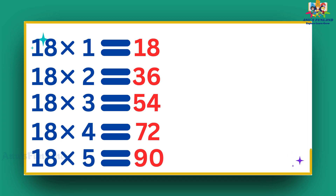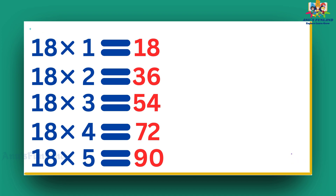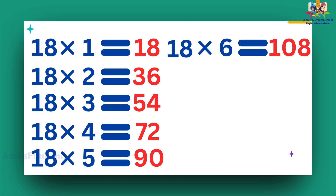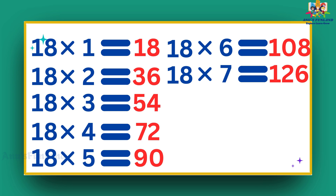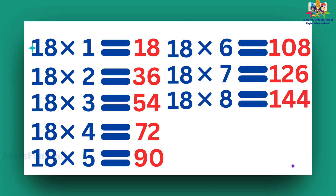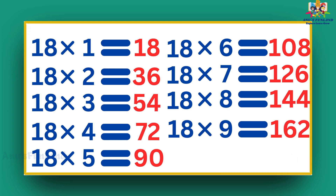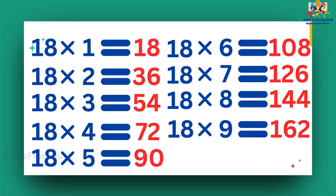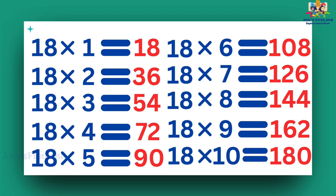18 fives are 90. 18 sixes are 108. 18 sevens are 126. 18 eights are 144. 18 nines are 162. 18 tens are 180.